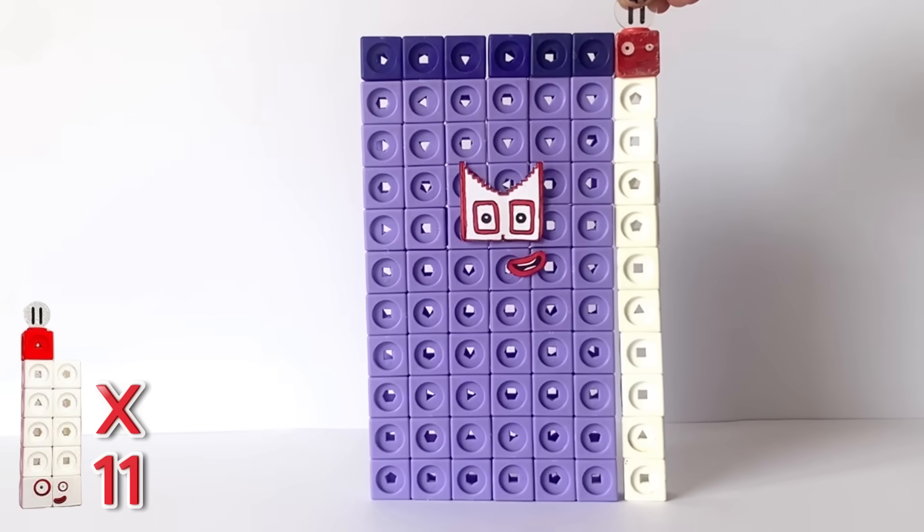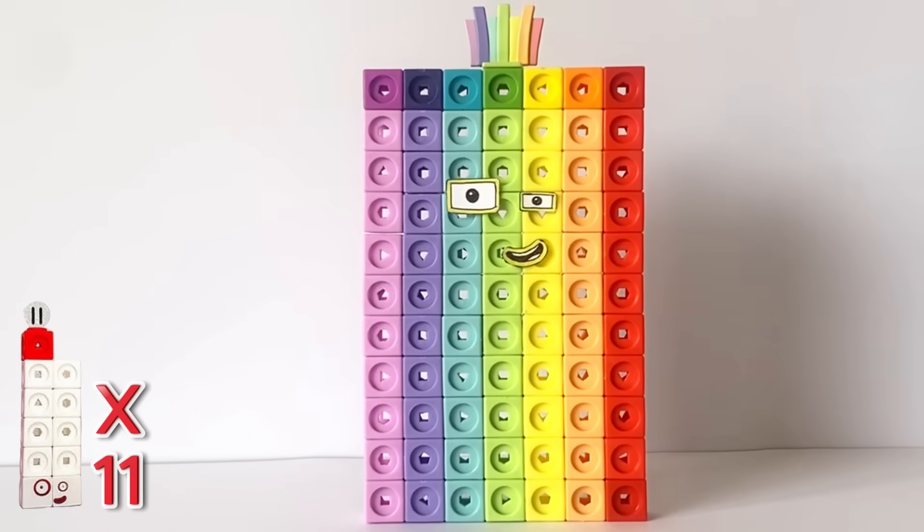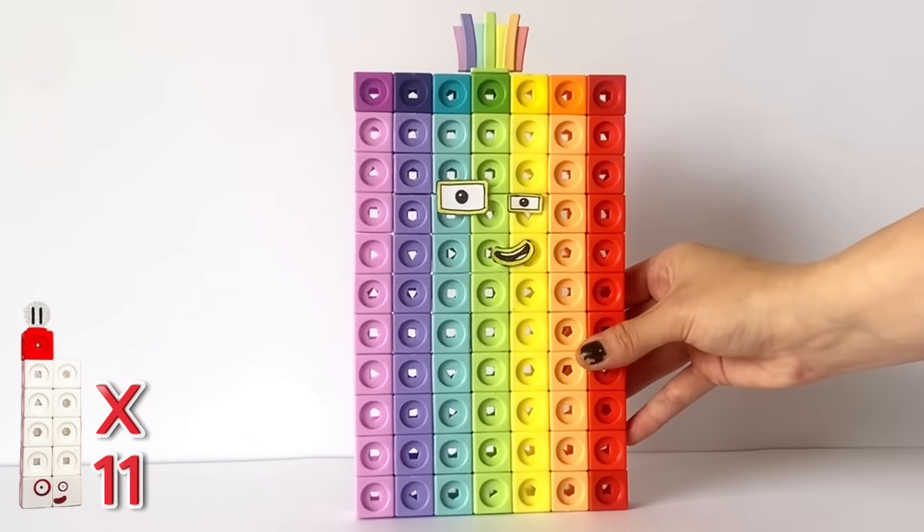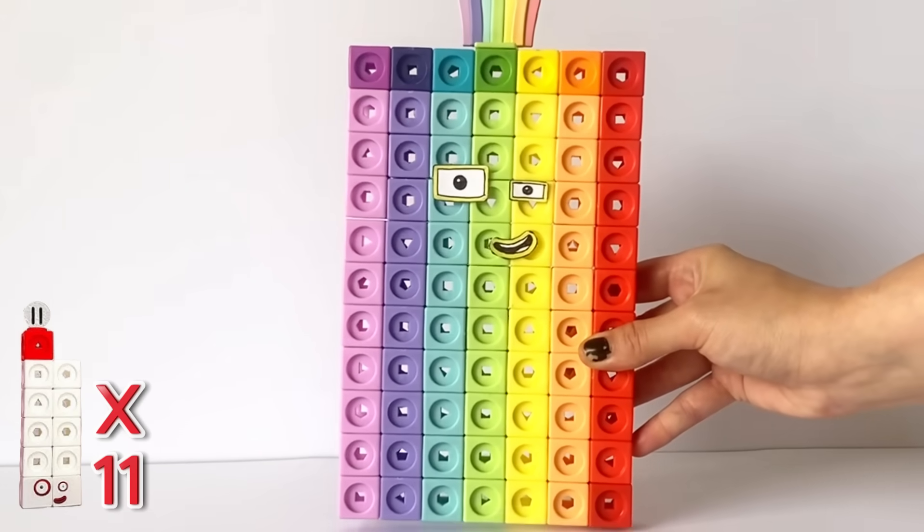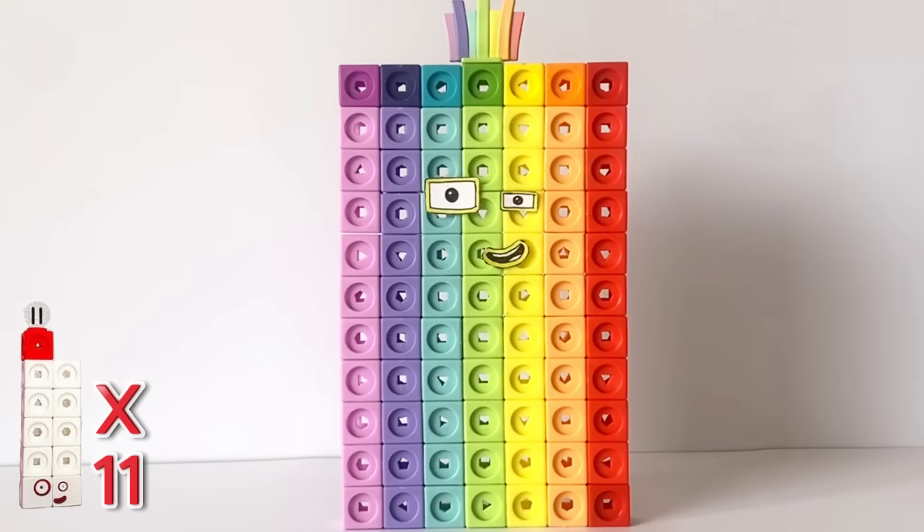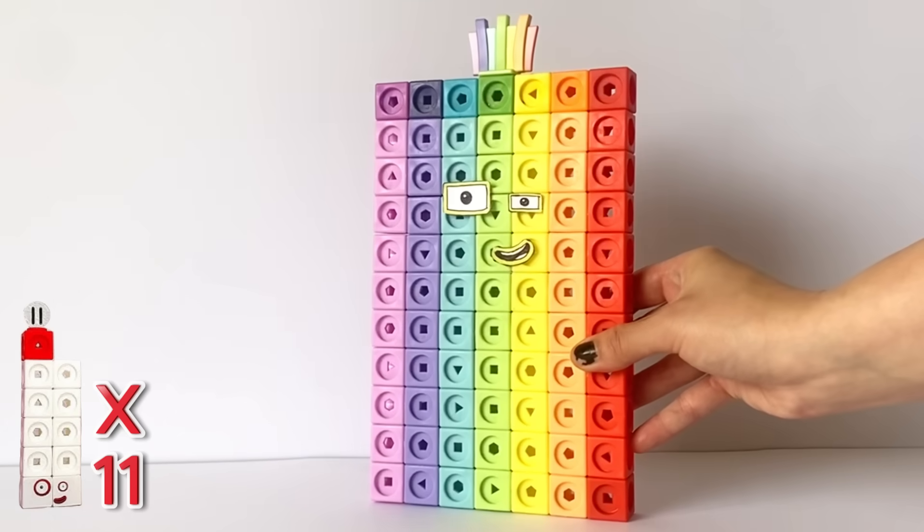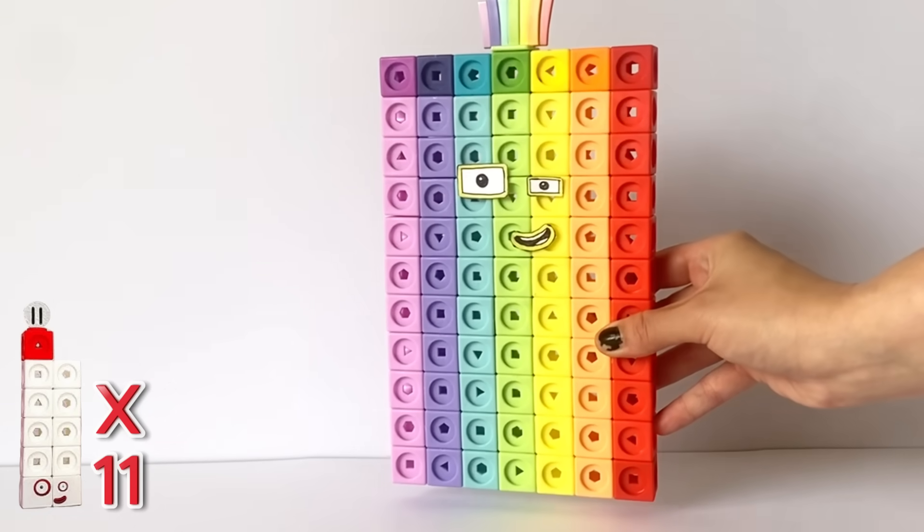The next multiplication we have is 7 times 11 equals 77. And 77 looks a lot like NumberBlock 70. However, 77 has 7 extra rainbow coloured blocks and 2 odd shaped eyes just like 11, 22, 33 and 44.